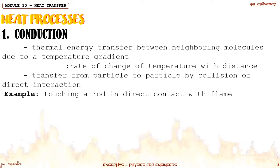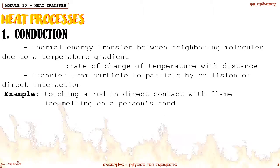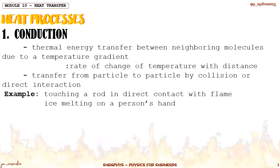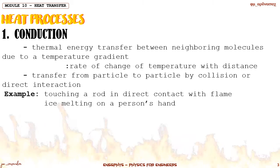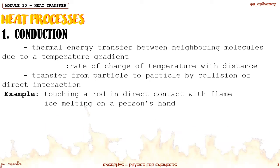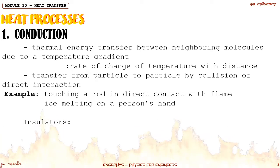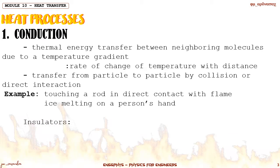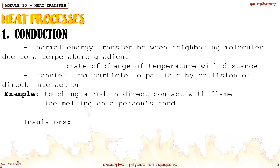For conduction, there should be physical contact between the two objects. Examples of conduction include touching a rod in direct contact with a flame, or when you touch your caldero with your bare hands — you get burned because the heat from the caldero is transferred to your hands, which are at a lower temperature. Another example is ice melting on your hand, where the transfer happens because the ice is directly on the hand. The heat from the hand goes to the ice, that's why the ice is melting.